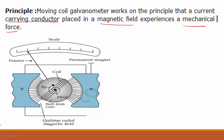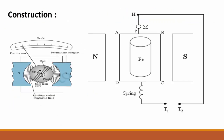Working on the principle that the current carrying conductor placed in a magnetic field experiences a mechanical force. Here, the N and S are two concave-shaped permanent magnets. There is a pointer and a scale. The construction consists of a coil, spring, pivot, soft iron, and a uniform radial magnetic field. This is the principle of the moving coil galvanometer. The next concept is construction.